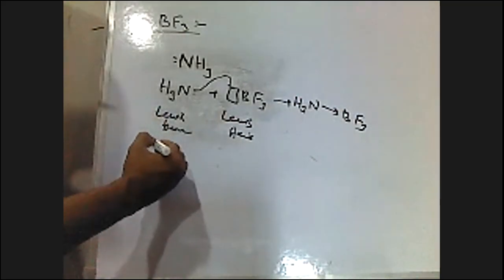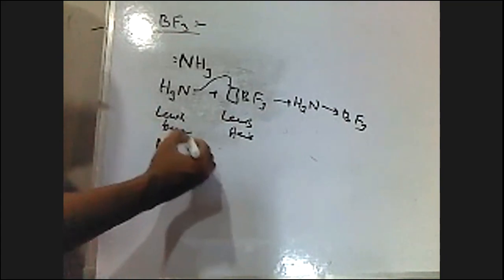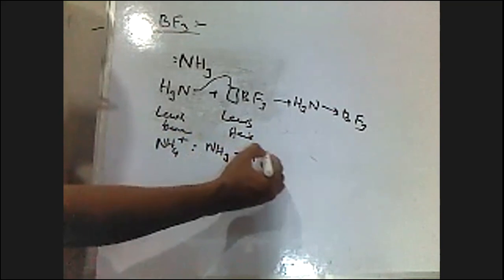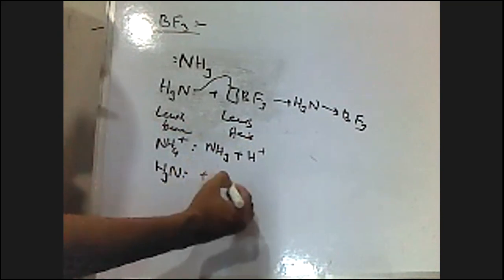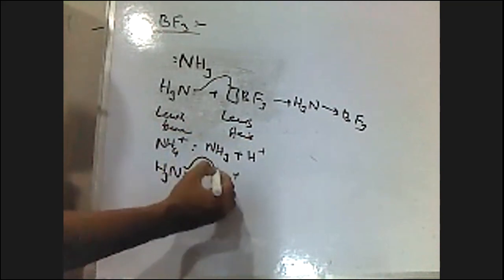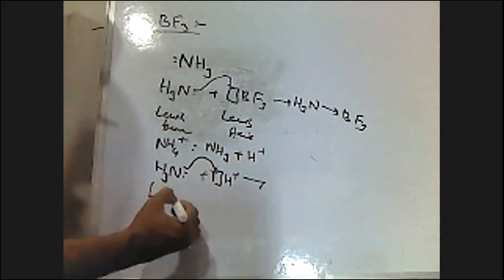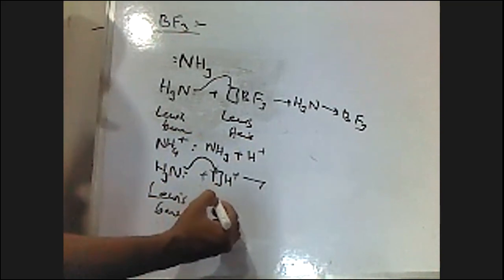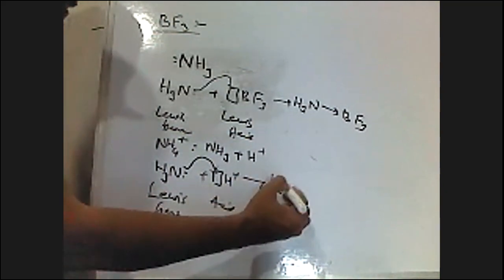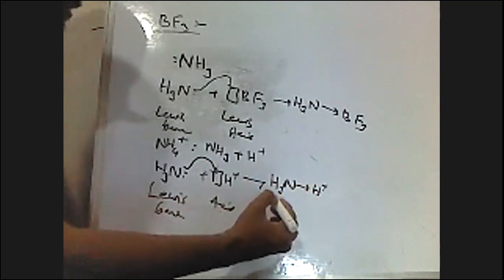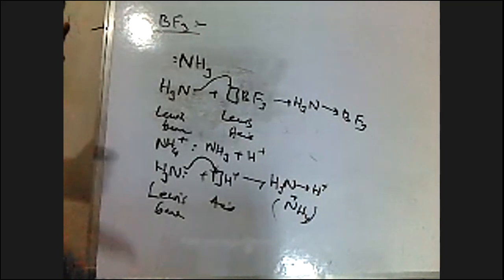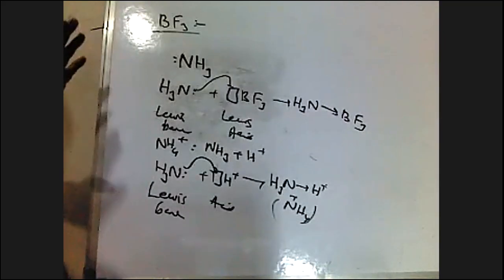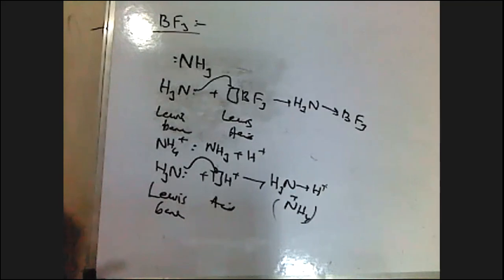Similarly, we can explain the formation of the ammonium ion. The NH4+ ion is formed from NH3 and H+. We know that nitrogen has a lone pair of electrons in ammonia, and H+ has a vacant orbital. So NH3 donates its electron pair — that is why NH3 is called the Lewis base — and H+ accepts it, so H+ is called the Lewis acid. Together they form NH4+. So electron pair donor is called Lewis base, and electron pair acceptor is called Lewis acid.